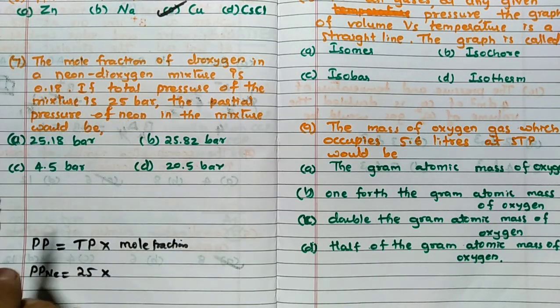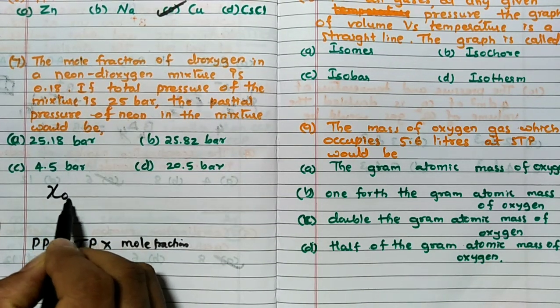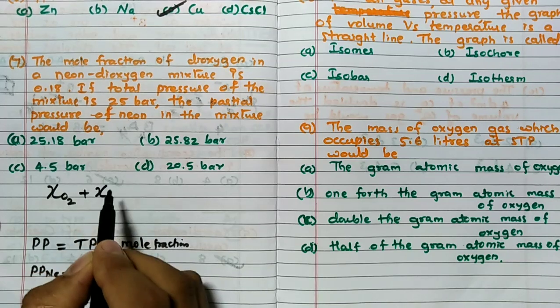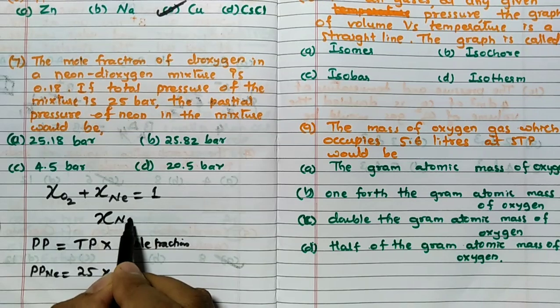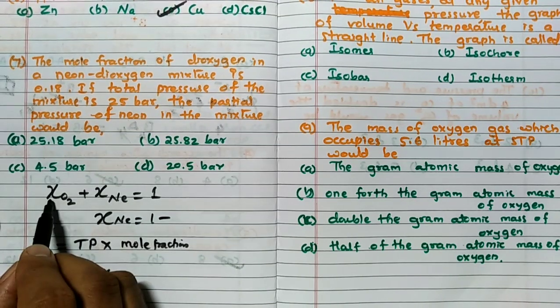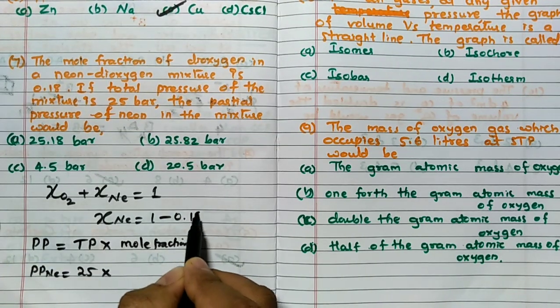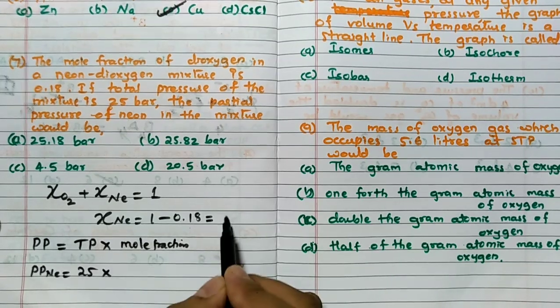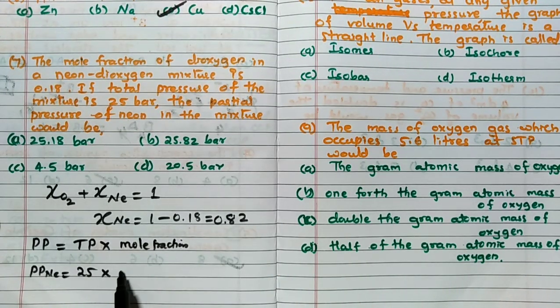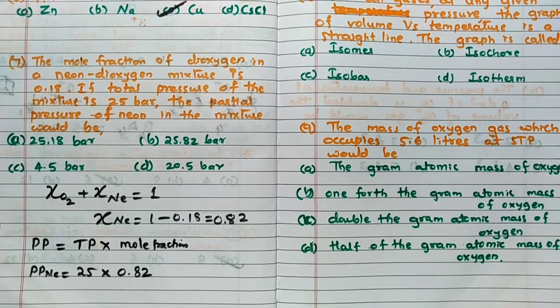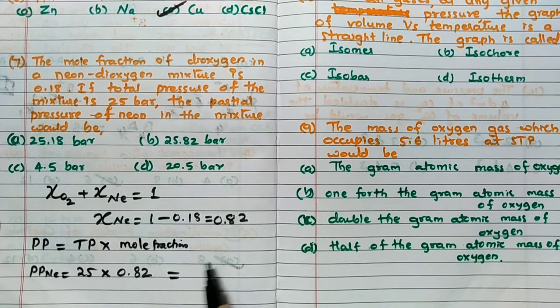Now, neon and dioxygen mixture is given, dioxygen mole fraction is given. Remember X of dioxygen plus X of neon is equal to 1. Hence mole fraction of neon is equal to 1 minus dioxygen, that is 0.18. So how much you get? 0.82 you will get. So if you calculate this, 25 into 0.82, you are going to get the answer.